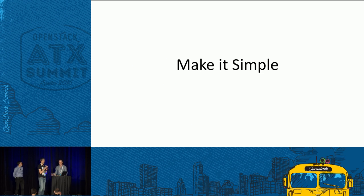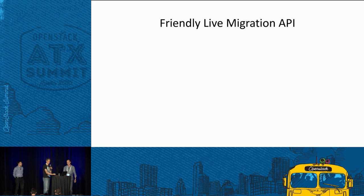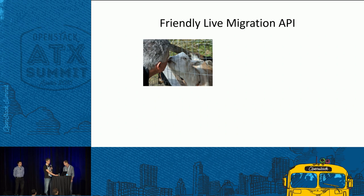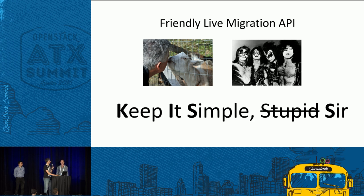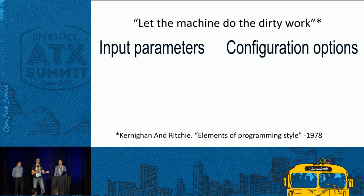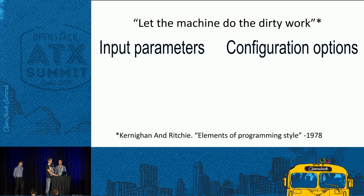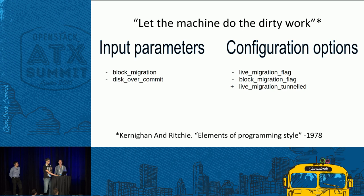To make it simple, we moved some logic into Nova rather than asking operators to do the right configurations. We focused on two main things: removing some input parameters — particularly the block migration and disk-over-commit flags — and tidying up configuration options. We deprecated the live migration flag and the block migration flag in favor of a new flag called live migration tunnel.